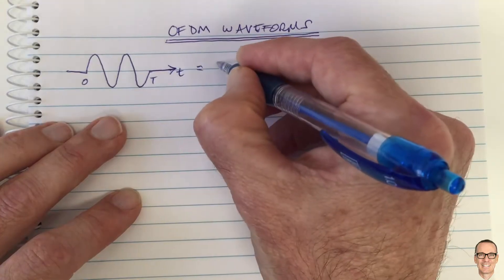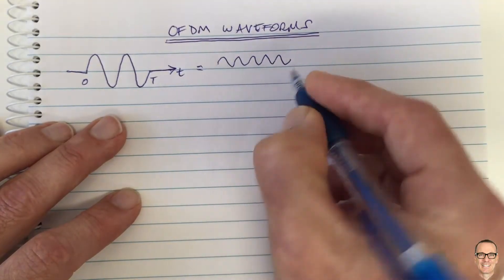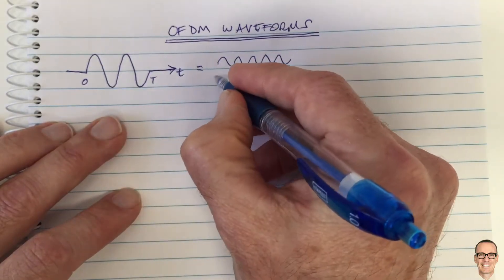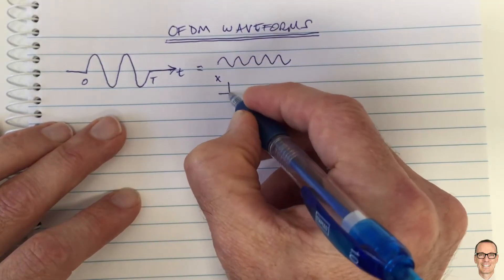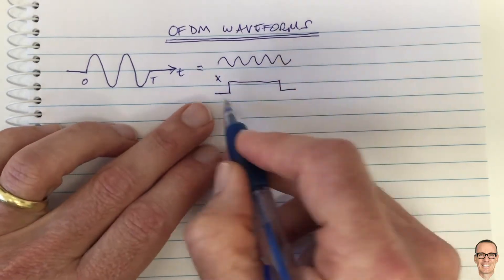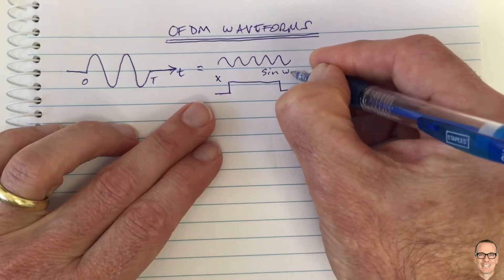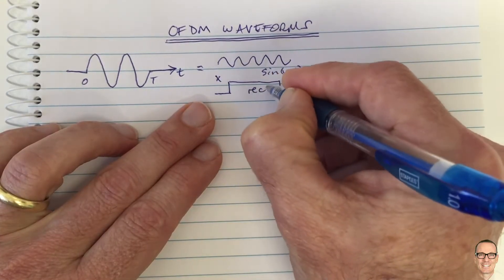Well this signal can be represented as a carrier waveform, the sine waveform at that frequency, multiplied by the rectangular function which turns the carrier on and off. That's the multiplication. So this is a sine waveform at the carrier frequency and this is the rect function.